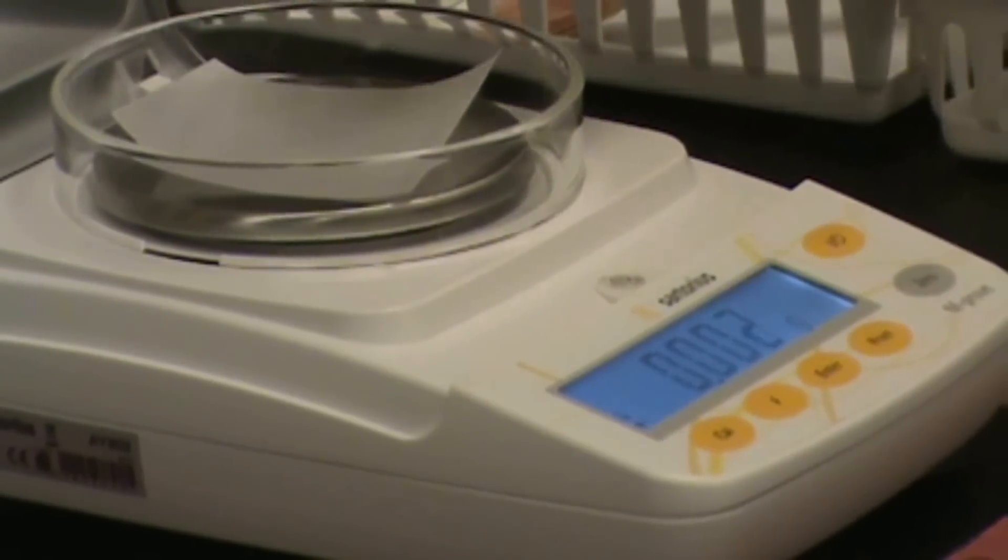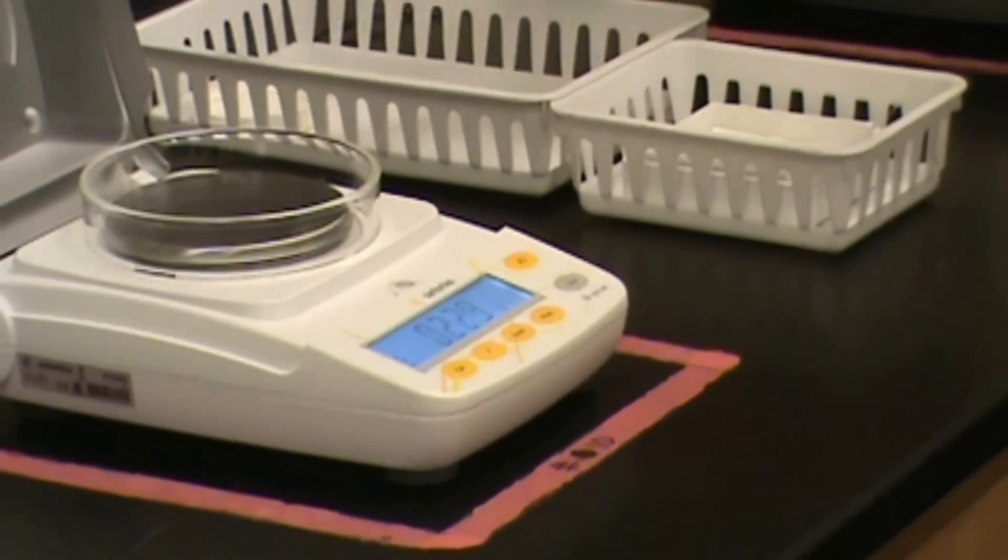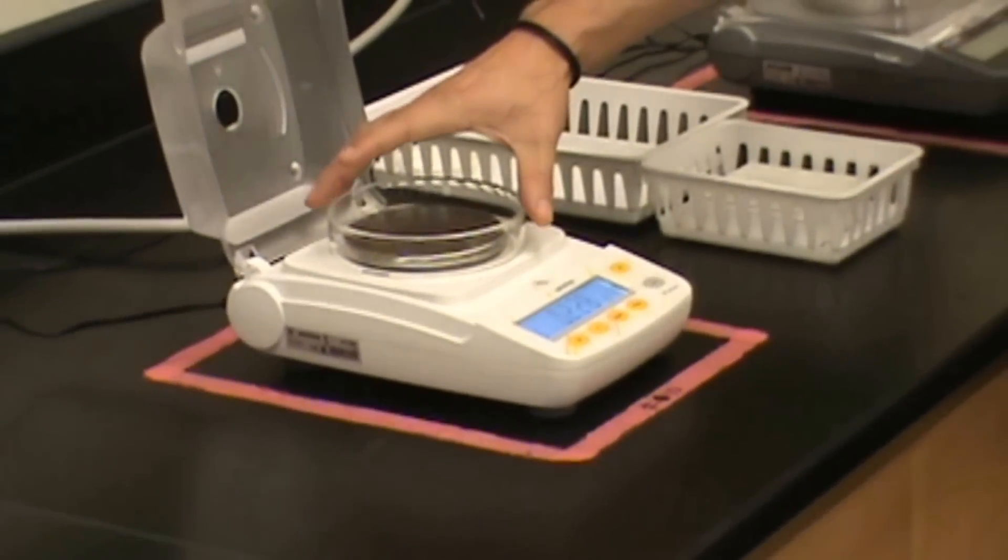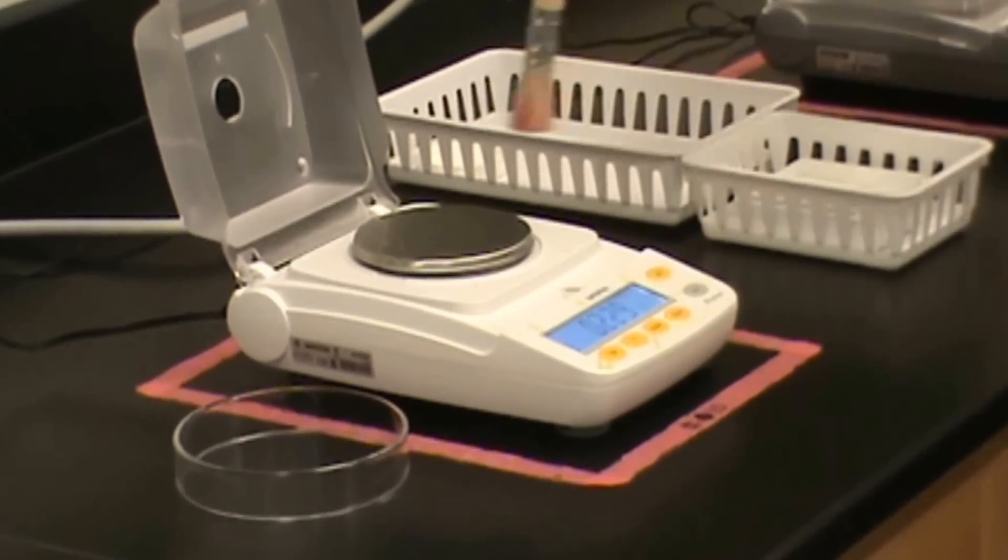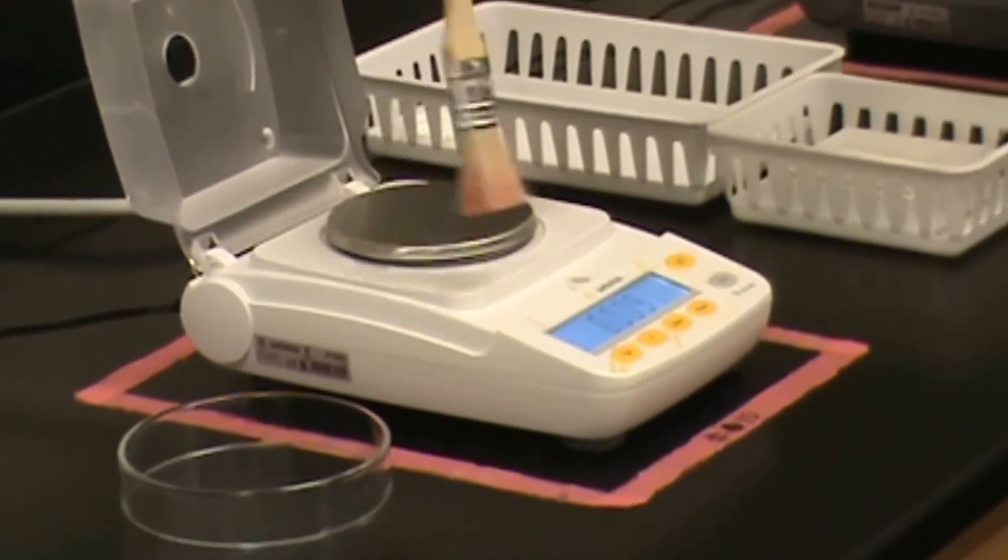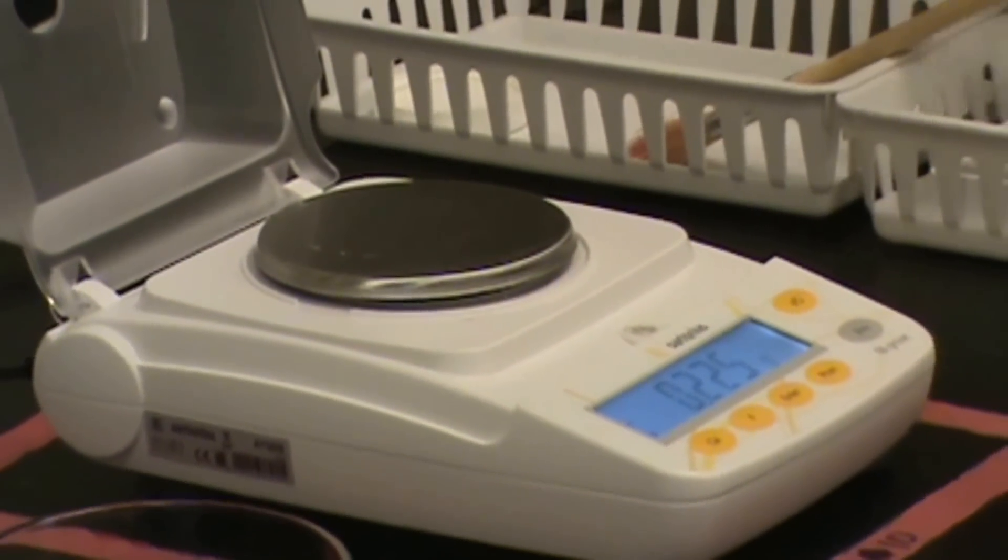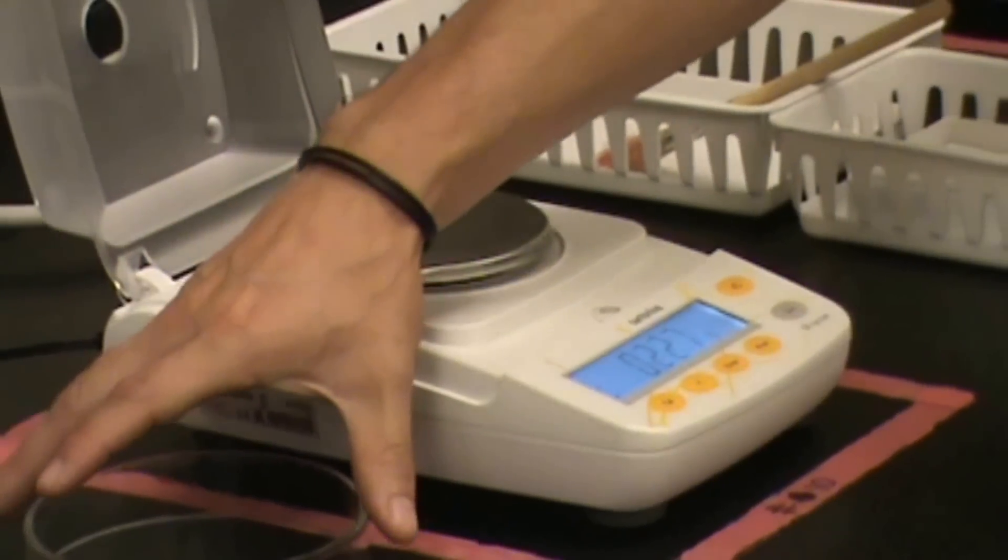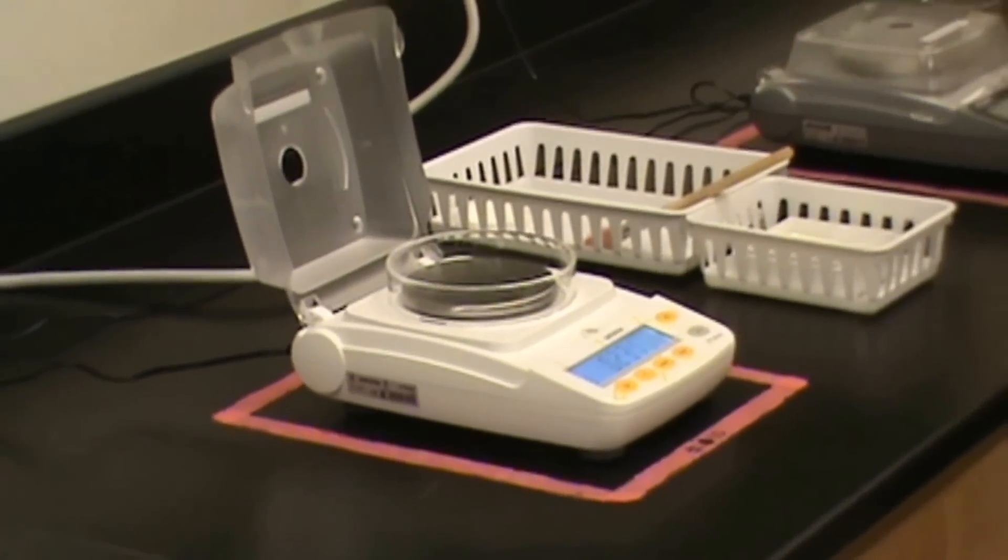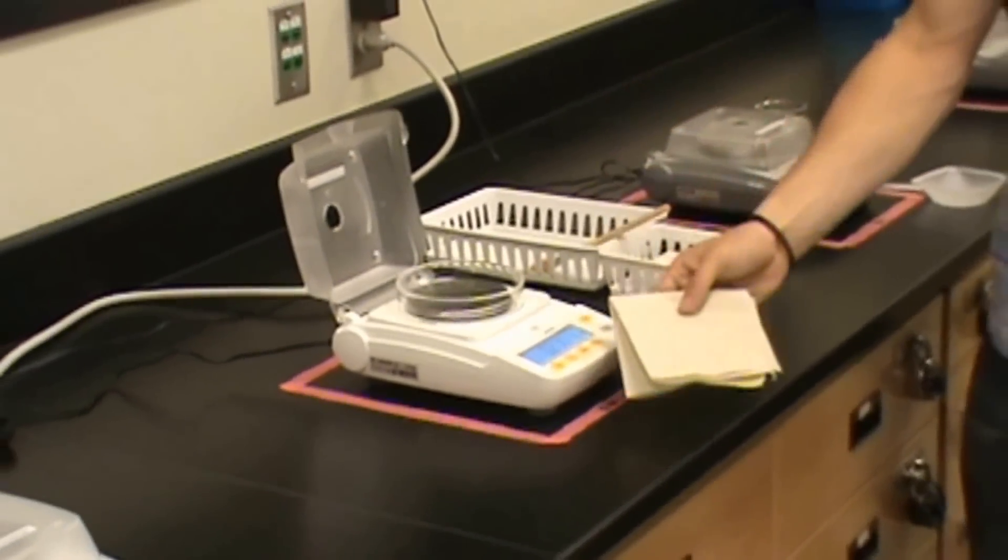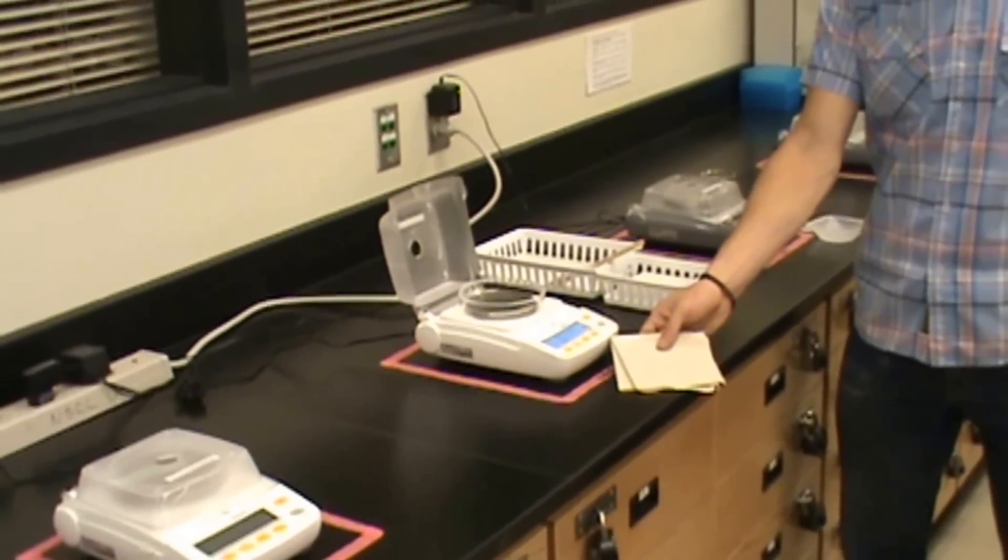When you're finished using the balance, you want to make sure that you've cleaned the balance. In order to do that, you'll want to use a brush and you'll probably need to remove the wind guard. The brush can be used to brush off any chemicals that might have fallen on the balance. Should you make a mess of the counter while cleaning the balance, I recommend that you use a damp paper towel to wipe down the counter. You want to leave the workspace at least as clean as when you found it.